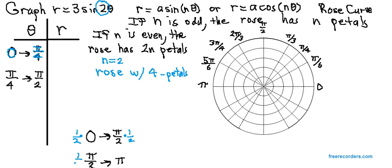Same thing with the next row. You multiply the numbers you would normally plug in by 1 over 2. So, pi over 2 times 1 over 2 is pi over 4, and pi times 1 over 2 gives us pi over 2.